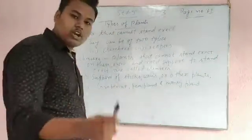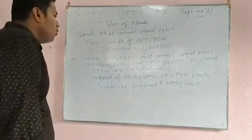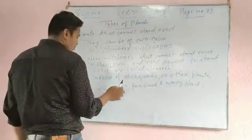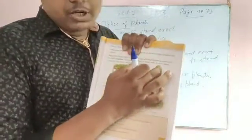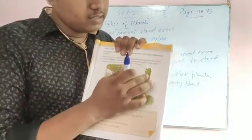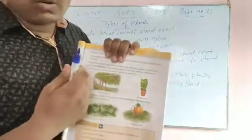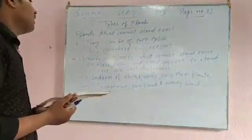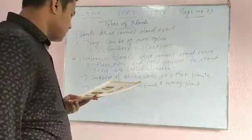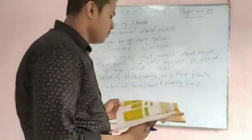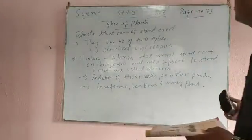Plants that cannot stand erect — erect means straight — on their own and need support are called climbers. You can see the figure: money plant has the support of a stick, and grapevine has the support of a wall. So plants that cannot stand erect on their own and need support are called climbers. Examples: grapevine, pea plant, and money plant.